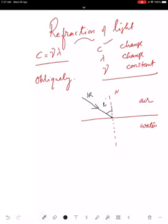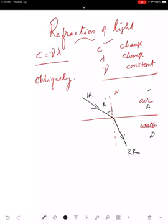When the ray goes from air to water, it changes its path. Water is a denser medium and air is a rare medium because light travels faster in air and the velocity in water is less. If light finds difficulty to move, or if its velocity is less in a medium, we say that medium is denser. This light ray bends toward the normal — this refracted ray makes an angle with the normal called the angle of refraction.